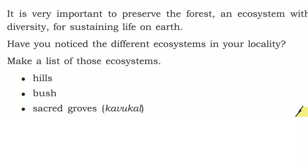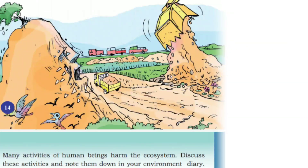Have you noticed different ecosystems in your locality? Examples include hills, bushes, sacred groves, forests, ponds, rivers, and groups of rocks. These are all different types of ecosystems. Many types of human activities lead to harm to the ecosystem.